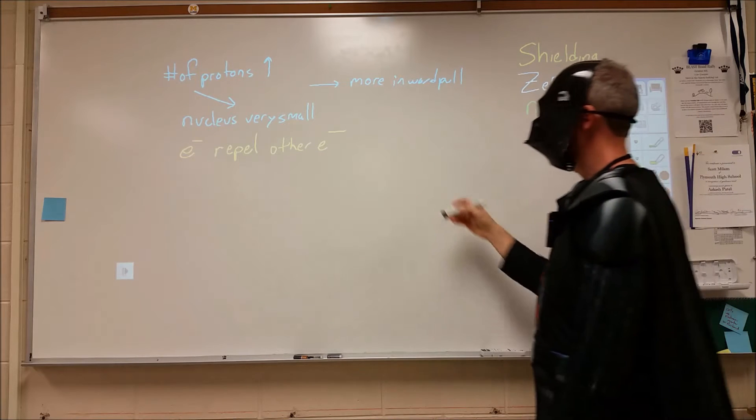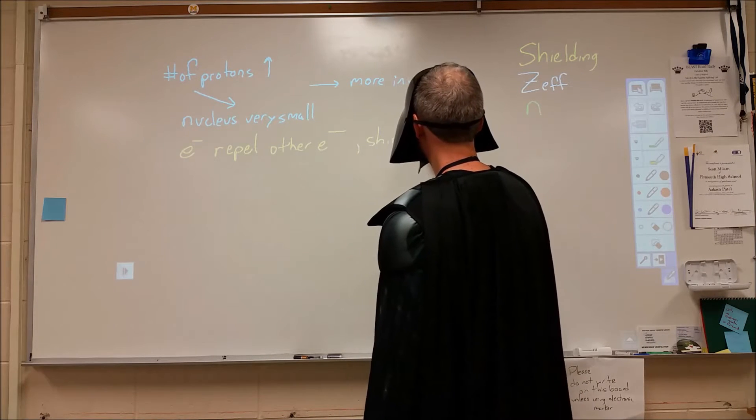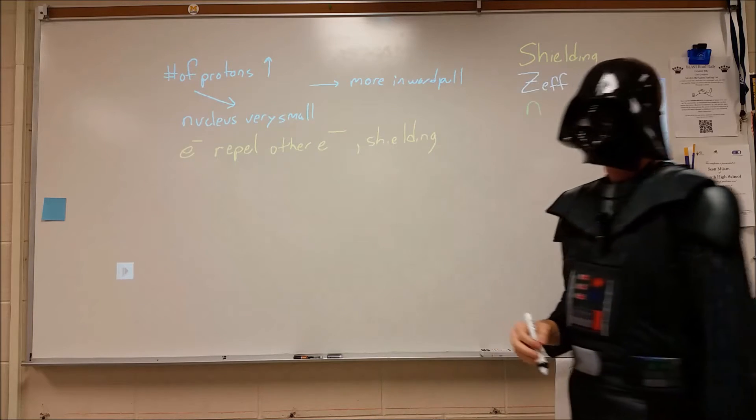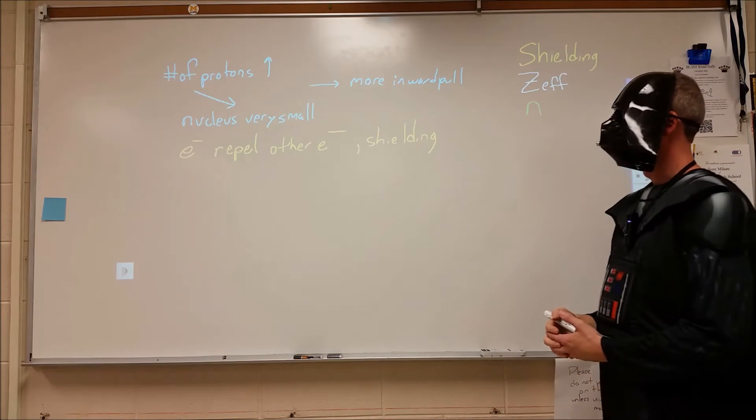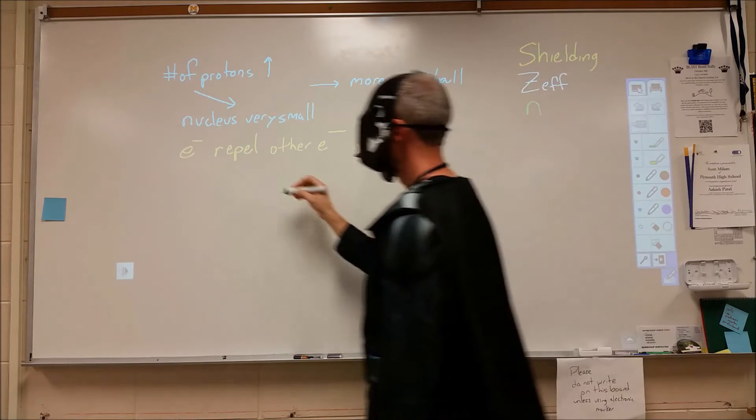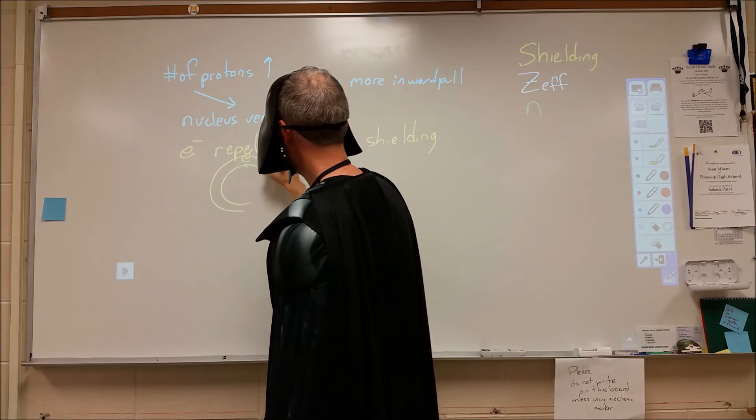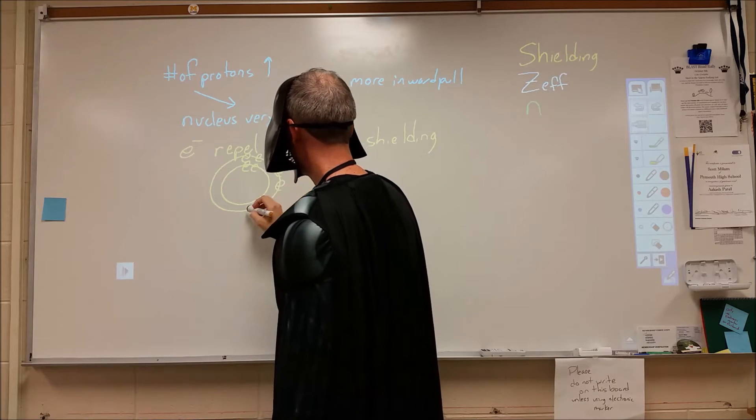So electrons repelling other electrons is given a name. It's given the name shielding. But really we could call it electron repulsion. Now what's interesting about electron-electron repulsion is that within an energy level, the electrons within an energy level do not repel each other very much.